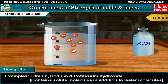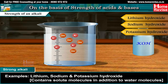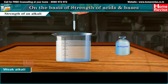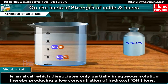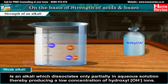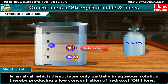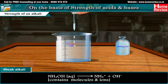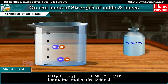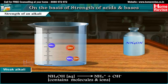Examples of strong alkalis: lithium, sodium and potassium hydroxide. A weak alkali is one which dissociates only partially in aqueous solution, producing a low concentration of OH- ions. NH4OH(aq) reversibly gives NH4+ plus OH-. Contains molecules and ions.